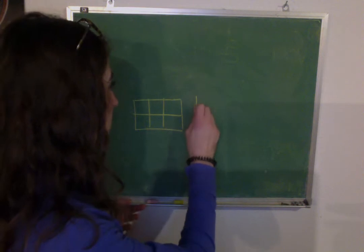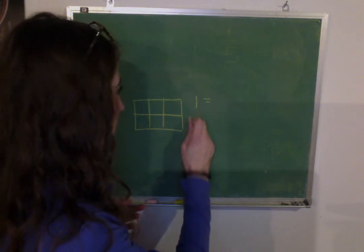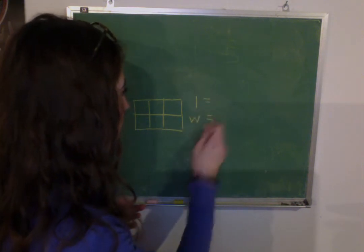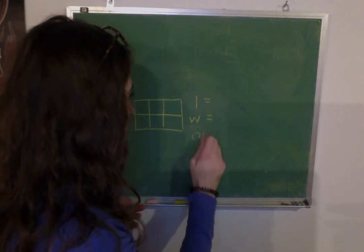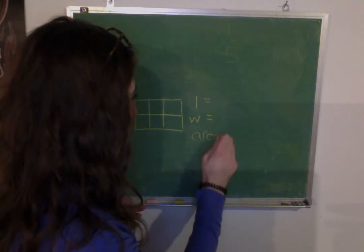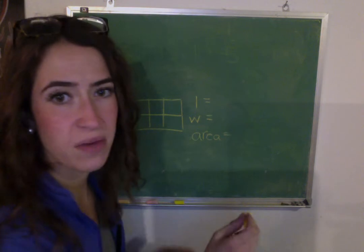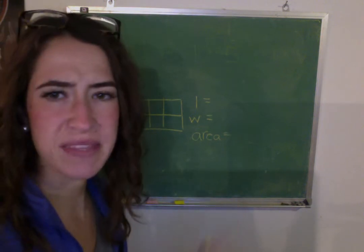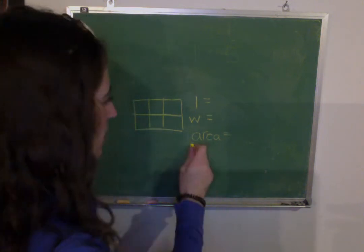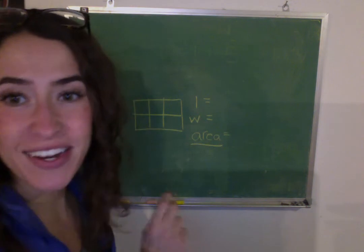They usually already have squares drawn into them, so that makes it a lot easier. So most of our problems, it'll usually say length, width, and then it'll ask for area. And that looks backwards to you guys. This says area, just so you know.